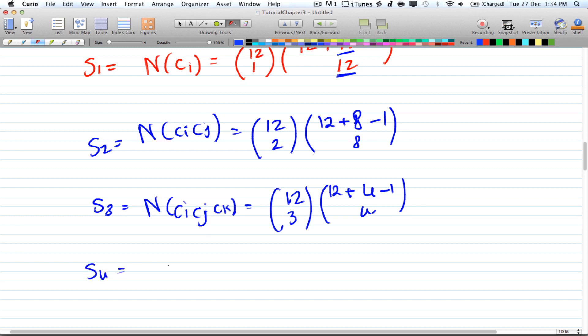Then you got s4 is equal to n ci, cj, ck, and cl. And that is equal to 12 choose 4 times 12 plus 0 minus 1, choose 0. And now we stop. There are two reasons to stop for inclusion and exclusion. One is that you're done with your variables, but since here we have 12, then we're not done. The second reason to stop is when your result goes beyond 0. So if you choose s5, then our result is minus 4, and minus 4 is less than 0. So we stop there. S4 is our last condition.